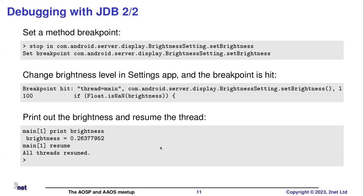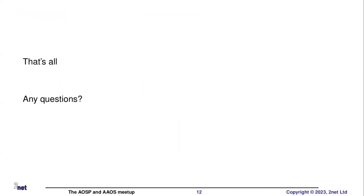You can then do all the other wonderful things you can do with debuggers. I have found this useful on a number of occasions when I couldn't be bothered to set up Android Studio for a particular debug session, and I just wanted to see if something hit that breakpoint — if it actually ran that line of code, and if it didn't, why not. So that's all — just a quick thought. Any questions?